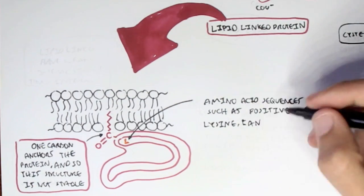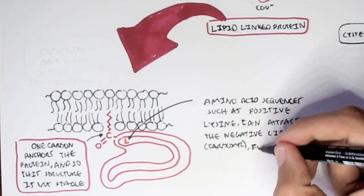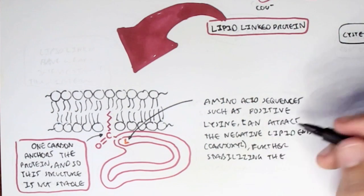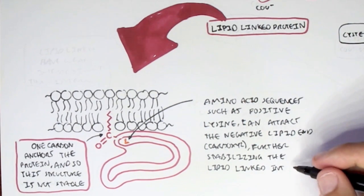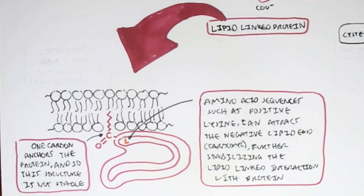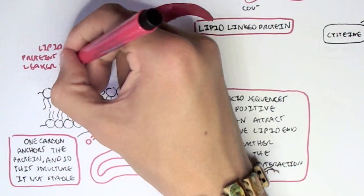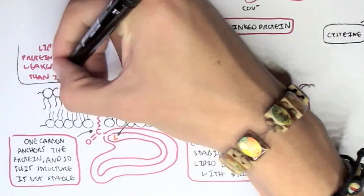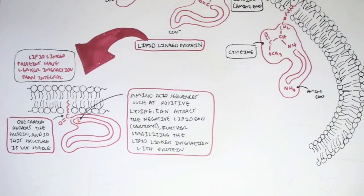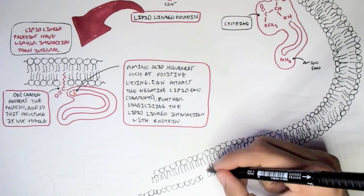However, amino acid sequences such as a positive lysine or other positive amino acids can actually attract the carboxyl end of the fatty acid, which will further stabilize this interaction and so will further stabilize the lipid-linked protein structure. However, lipid-linked proteins are not as stable as the integral proteins, which are the membrane-spanning proteins, if you remember.